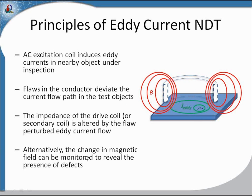Alternatively, we can monitor the change in magnetic field due to flaws by using a magnetic sensor such as a hall probe, a flux gate magnetometer, or a SQUID magnetometer.